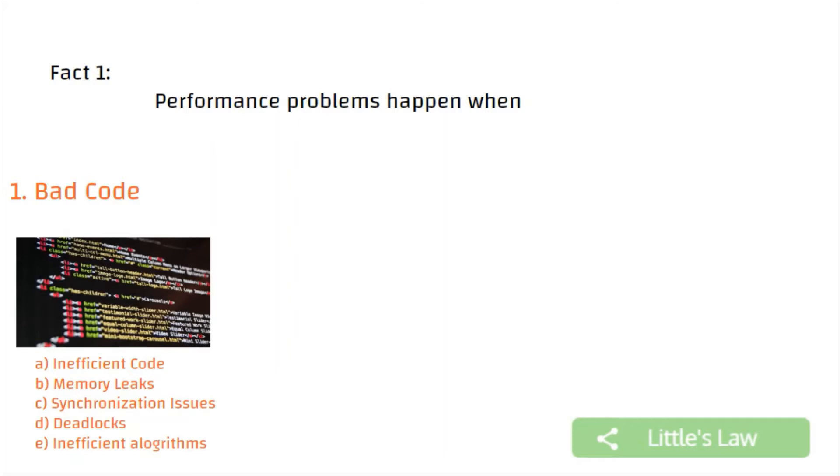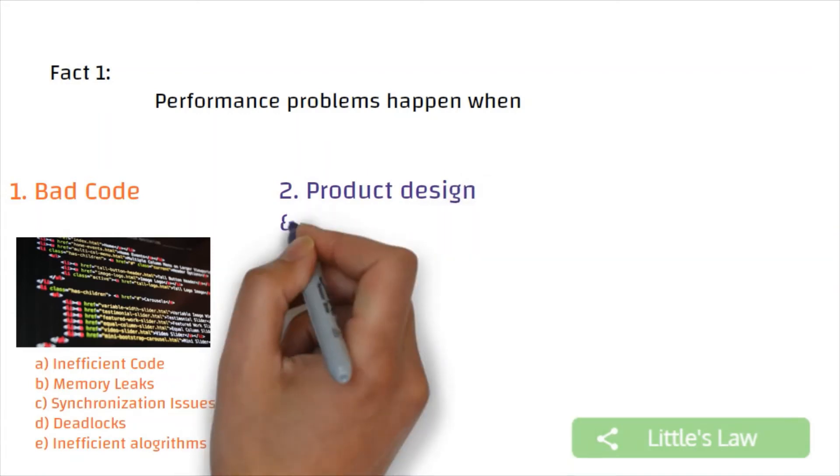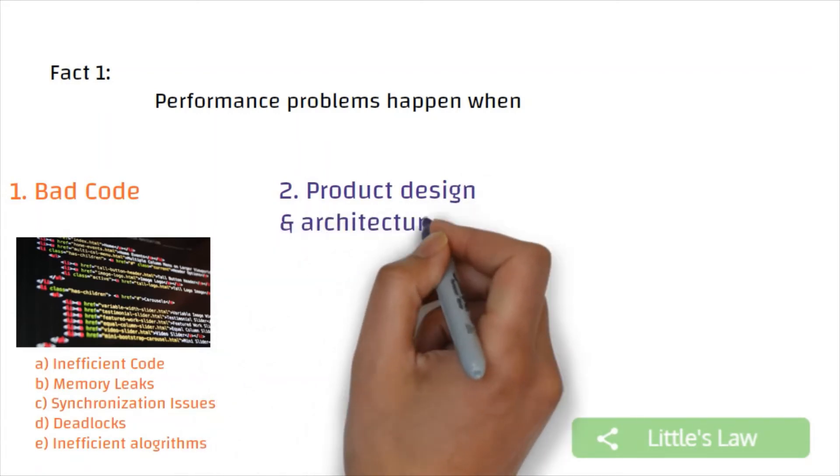Many times older versions of software or integrated legacy systems can also impact the application's performance. This can be tackled by taking the help of developers and making them use optimal coding practices. From the performance tester's area, we can deal with profilers and code reviews.